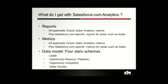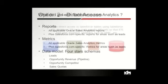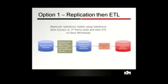In terms of the data model, we have four star schemas with extractors for: leads, opportunity revenue which is pipeline, opportunity competitor, and sales quotas. These are the subject areas where we see most customers getting the most value. We added sales quotas recently, and we're looking to add activities in the near future as well.